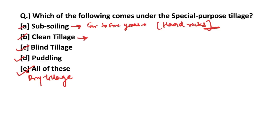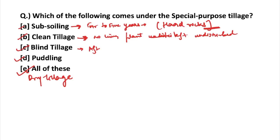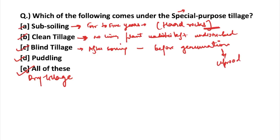Next is clean tillage — no living plant is left undisturbed in this method. The entire field is tilled so that not a single thing is left undisturbed. The purpose of clean tillage is to control weeds or pests. Blind tillage is done after sowing but before germination. The purpose of blind tillage is to uproot weeds — during the growing season weeds develop, so blind tillage is done to uproot them.